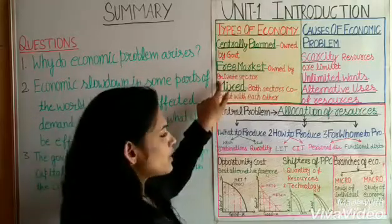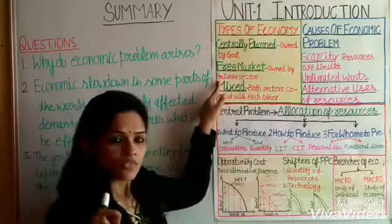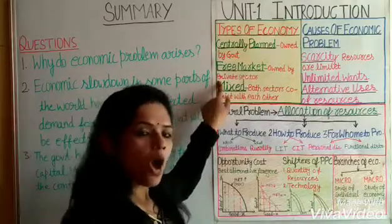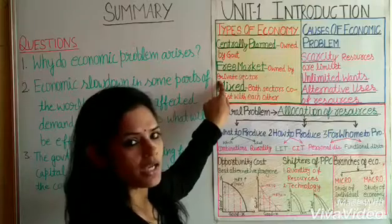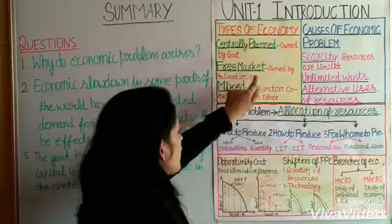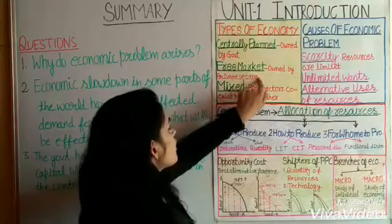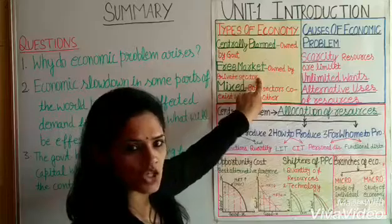Free Market Economy is owned by the Private Sector. This means all resources are controlled by individual owners. The main objective of this economy is Profit Maximization.